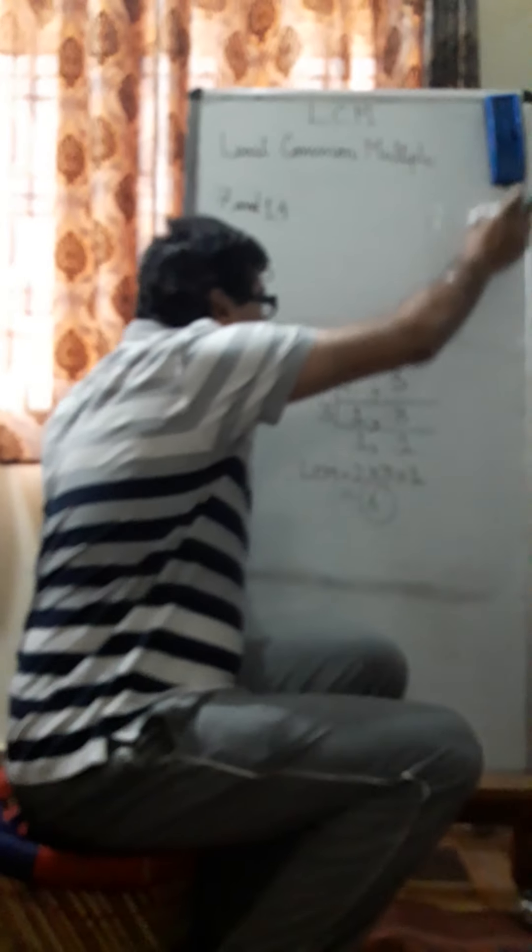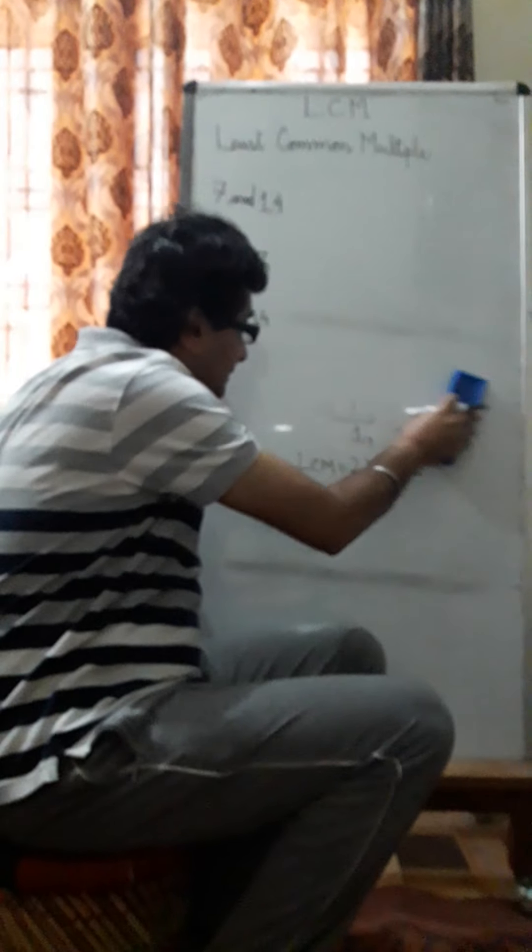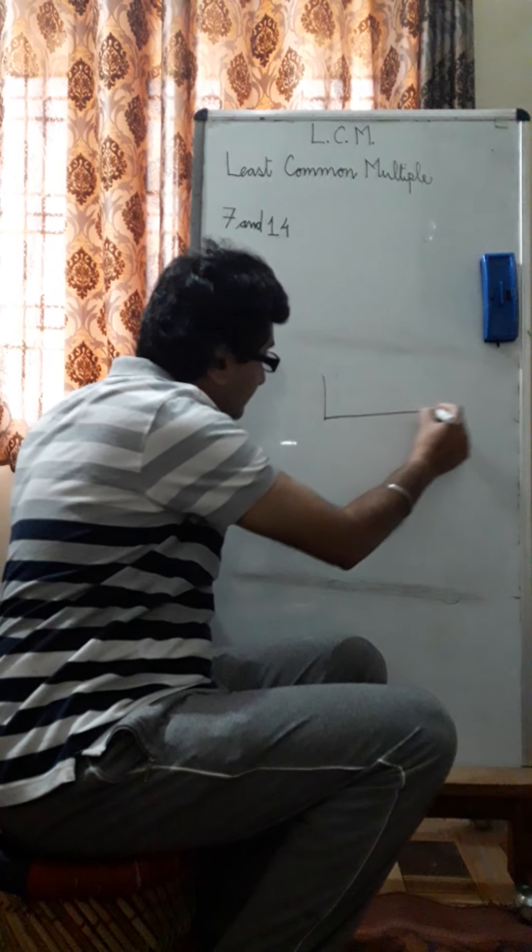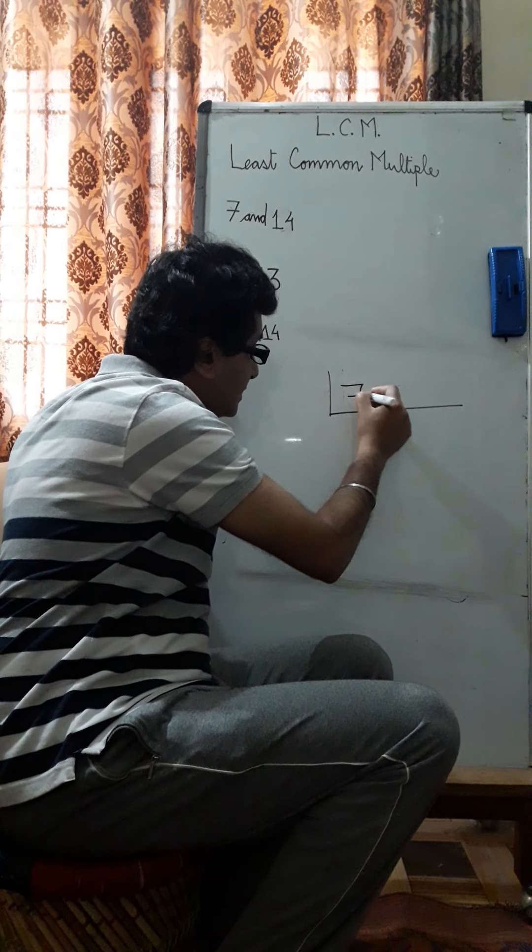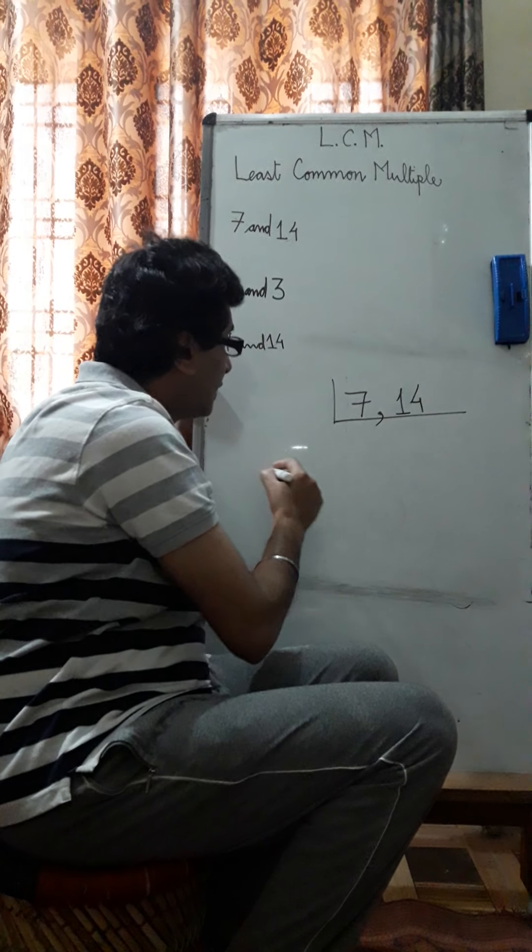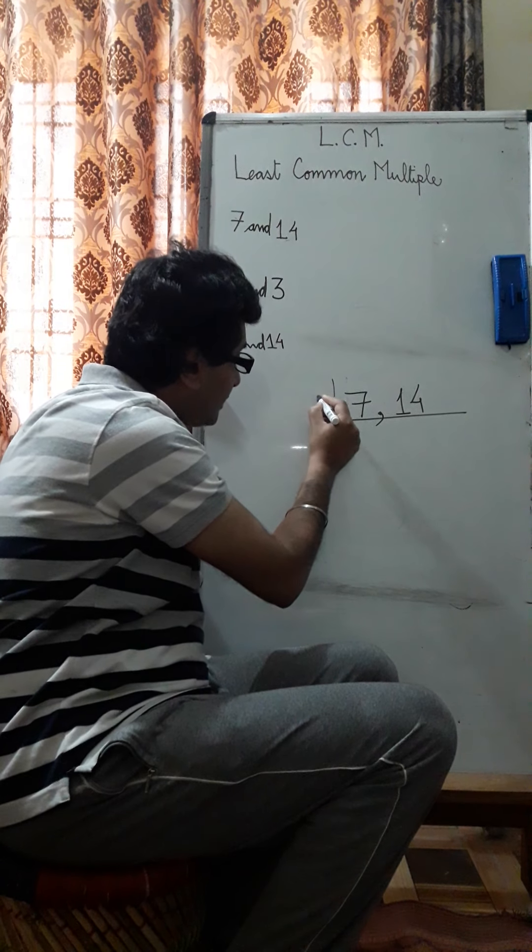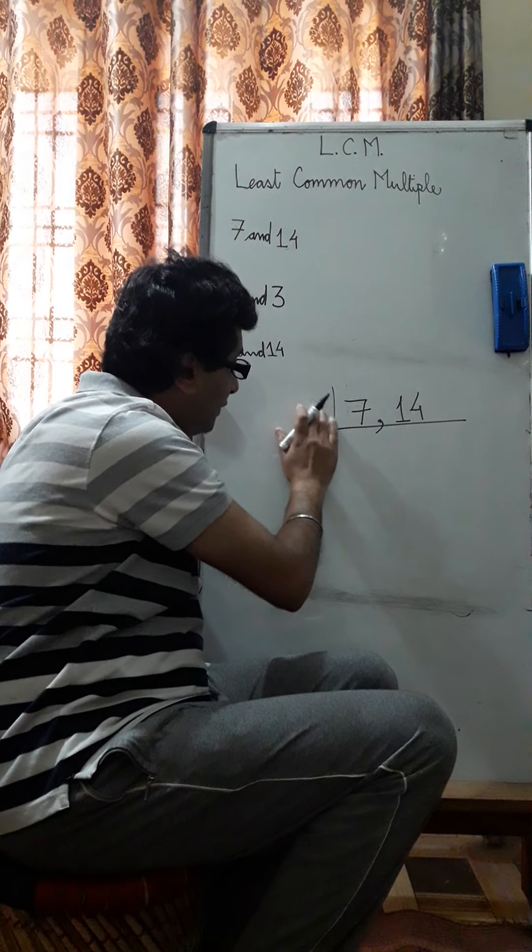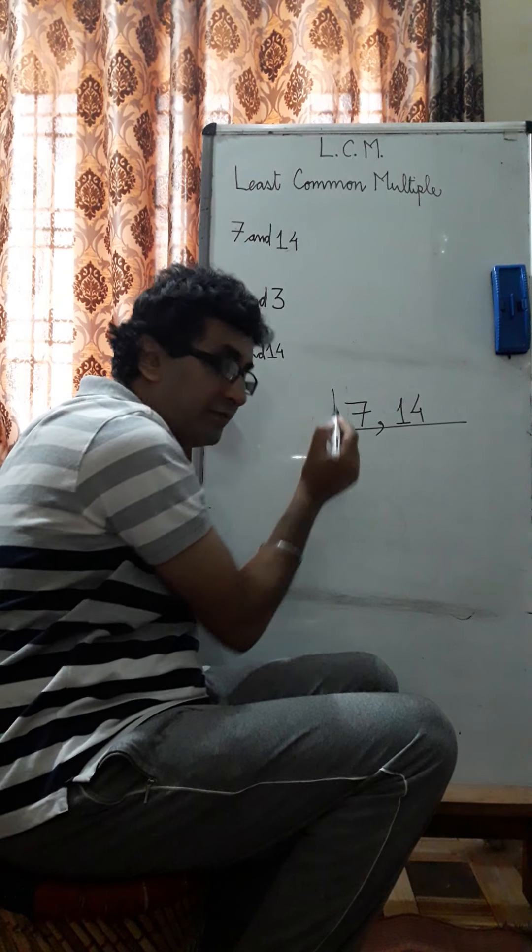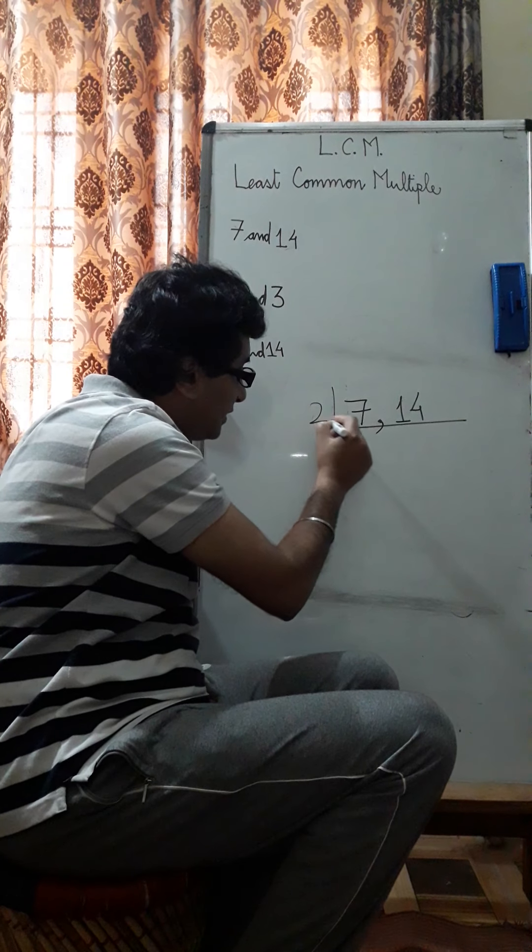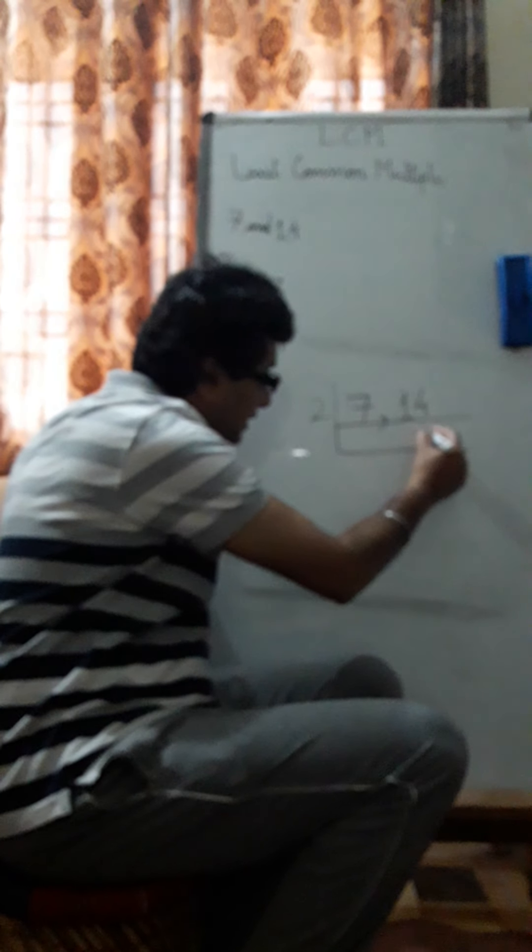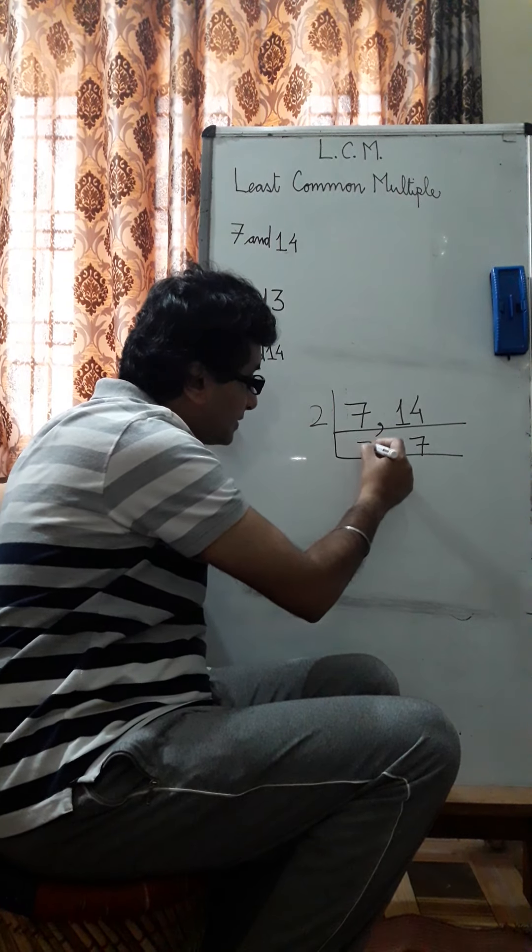Now let's take another number, 7 and 14. Smaller numbers. 7, 14. Take a 7. No. 14 is here. So it's an even number. Any even number, remember, can be divided by 2 without leaving a remainder. So 2 how many times 14? 7 times 14. And what comes down? 7.